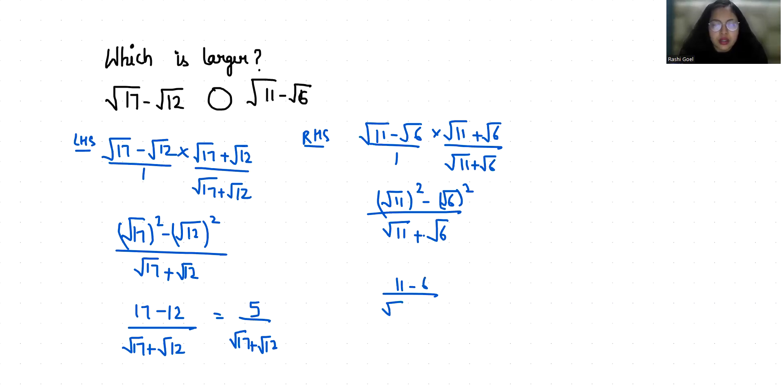Square root of 11 square is 11 minus 6 by square root of 11 plus square root of 6. This gives us 5 by square root of 11 plus square root of 6.